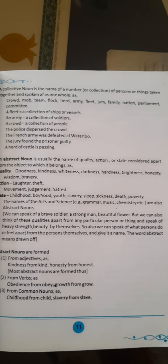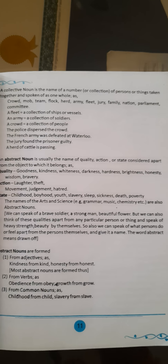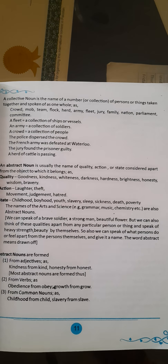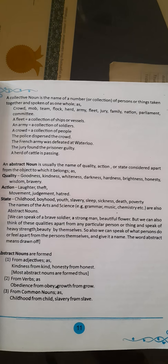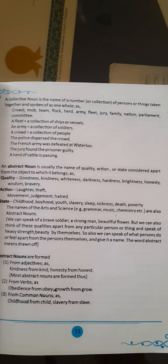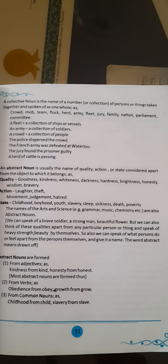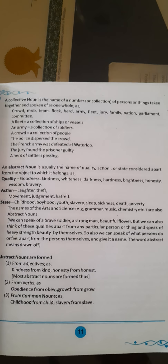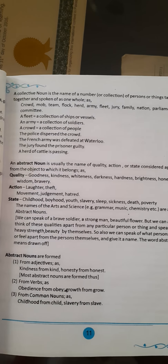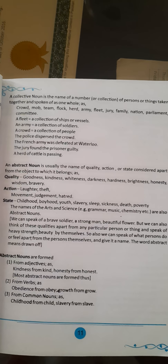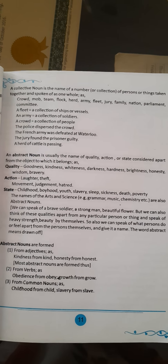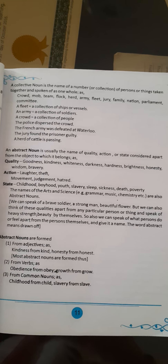We can speak of a brave soldier, a strong man, a beautiful flower, but we can also think of these qualities apart from any particular person or thing and speak of bravery, strength, beauty by themselves. The word abstract means drawn off. Abstract nouns are formed from adjectives, as kindness from kind, honesty from honest. Most abstract nouns are formed from verbs, as obedience from obey, growth from grow. From common nouns: childhood from child, slavery from slave.